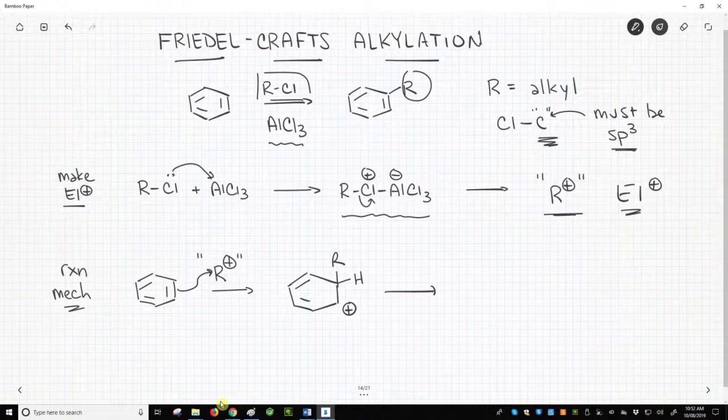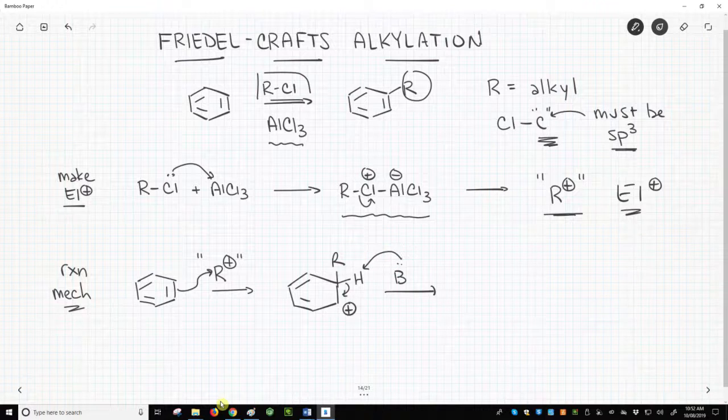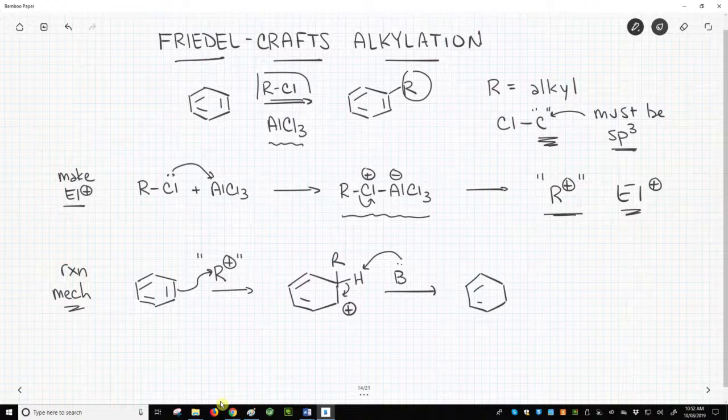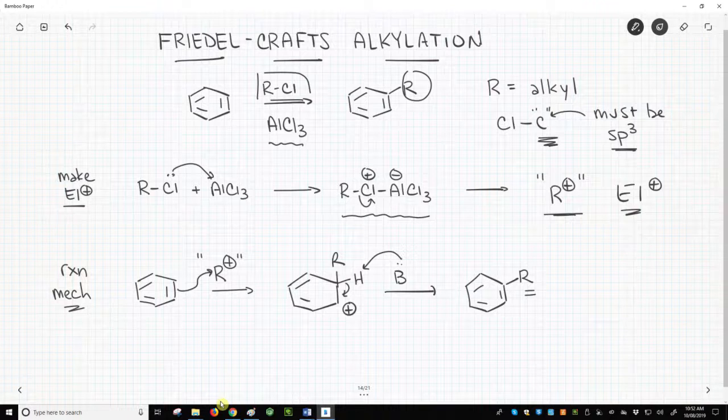A base, B, removes a beta-hydrogen to reform the aromatic ring with our alkyl group attached.